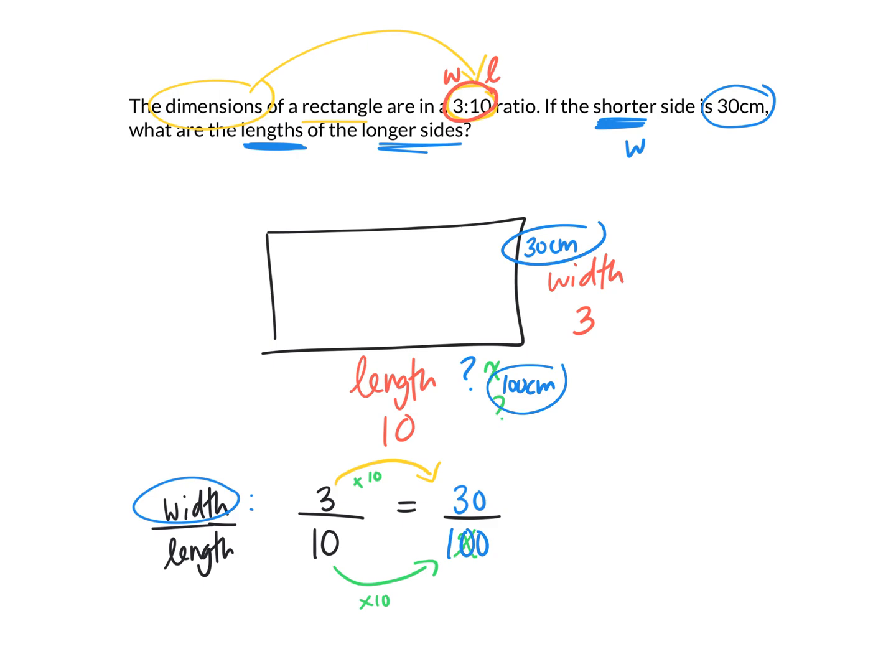Or you could use cross multiplication to solve this if the numbers are numbers where you can't figure out the answer in your head like that. So we would do 3 times x, 3x, and 10 times 30 is 300. We're trying to isolate for x, so we divide this by 3, divide this by 3, and x is equal to 100. We get the same answer.